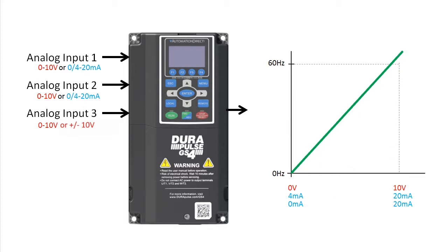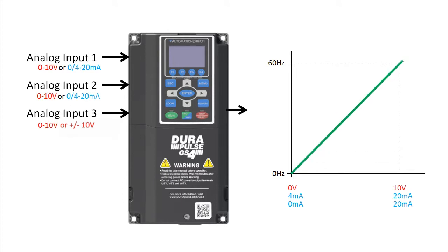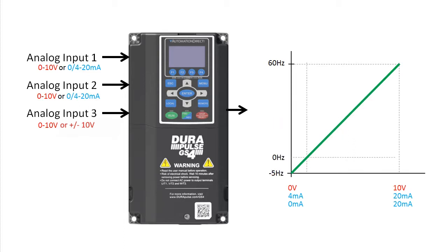You can increase the gain to increase the maximum output frequency. You can add in an offset so the motor has a minimum non-zero speed. You can split the range so half of it drives the motor in a forward direction and half drives it in reverse. You can have most of the analog input range drive the motor in a forward direction but use the rest of the range to jog the motor in reverse.